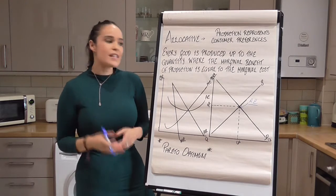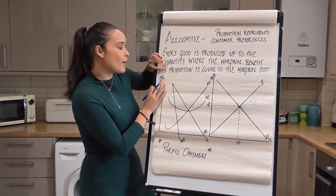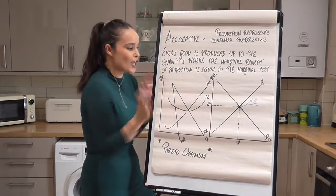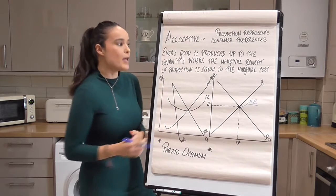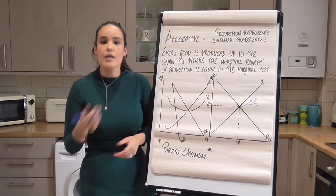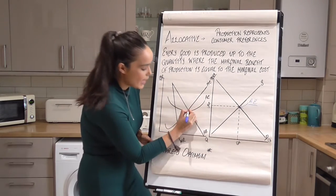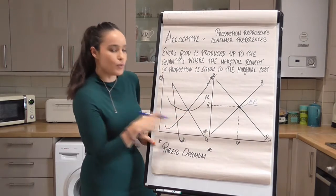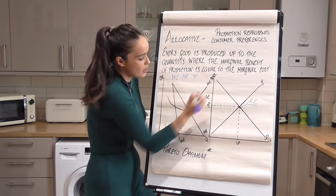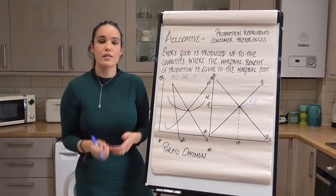Now where is that on this firm-level diagram? We know the marginal benefit of production equals the marginal cost, and we have our marginal cost line on the diagram. How do we measure benefit to consumers? Mainly we use the price. So allocative efficiency is where MC equals price, which means where MC equals AR equals price. So those are our positions of allocative efficiency.